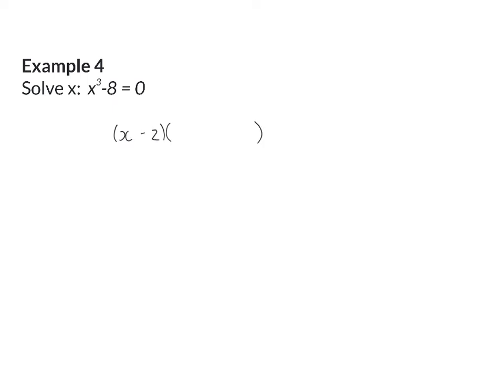And my second bracket will be the first term squared, the second term squared, and the product of the two terms with the opposite sign, so plus 2x.